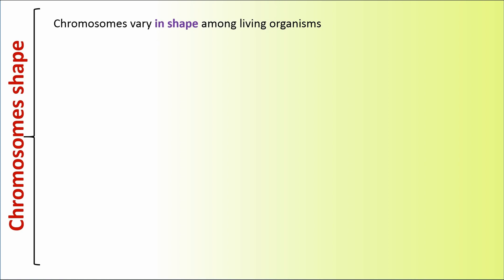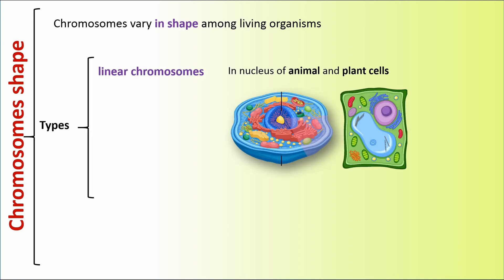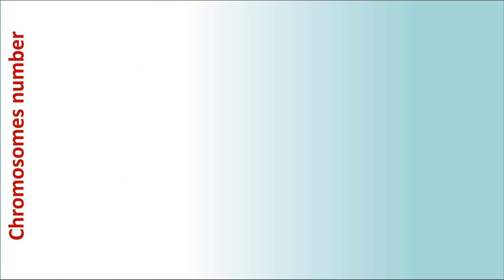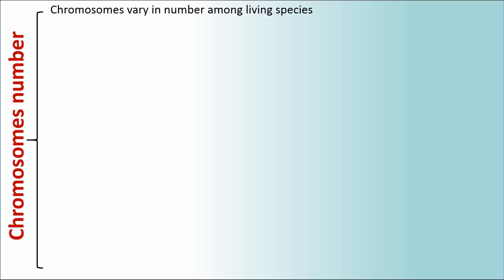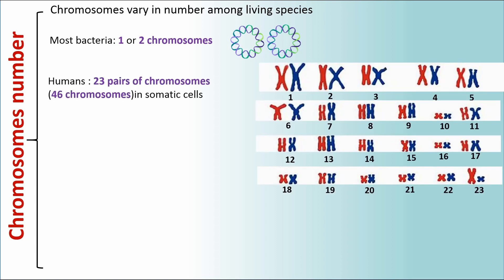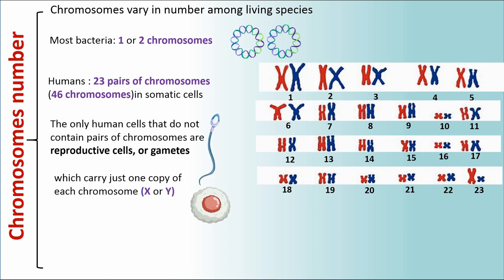Chromosomes vary in shape among living organisms. There are two types of shapes: linear chromosomes in the nucleus of animal and plant cells, and circular chromosomes in bacteria, mitochondria, and chloroplasts. Chromosomes also vary in number among living species. Most bacteria have one or two chromosomes, but humans have 23 pairs, or 46 chromosomes, in somatic cells. The only human cells that do not contain pairs of chromosomes are reproductive cells or gametes, which carry just one copy of each chromosome, X or Y.